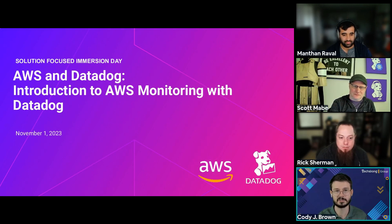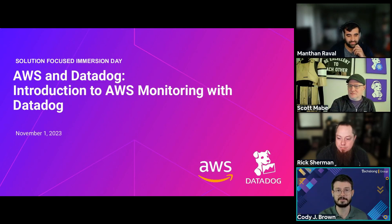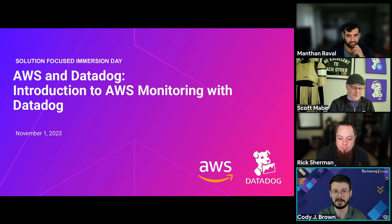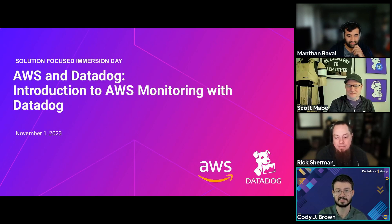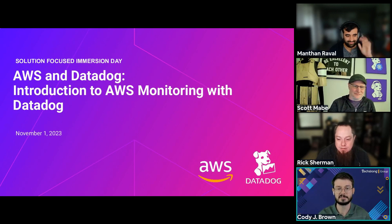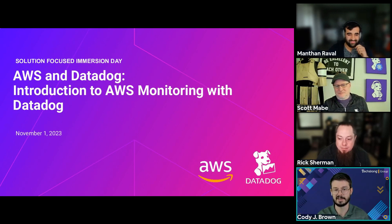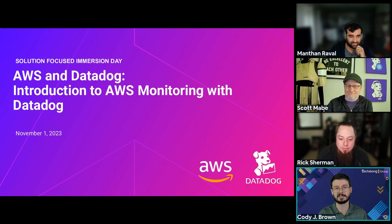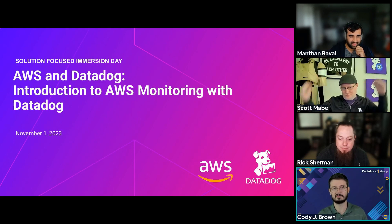Our topic for this AWS Immersion Day workshop is using observability to unlock cloud insights with both AWS and Datadog. I'm joined today by Scott Mabe, Technical Enablement Manager at Datadog; Rick Sherman, Manager of Advocacy for SRE and DevOps at Datadog; and Manthan Rival, Senior Solutions Architect at AWS. Manthan, you have some slides you'd like to take us through before we dive in.